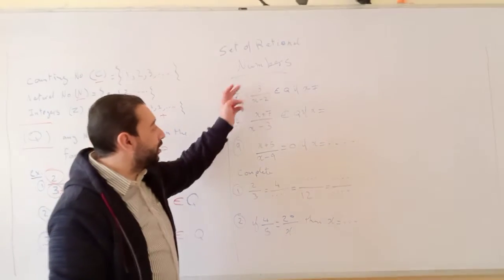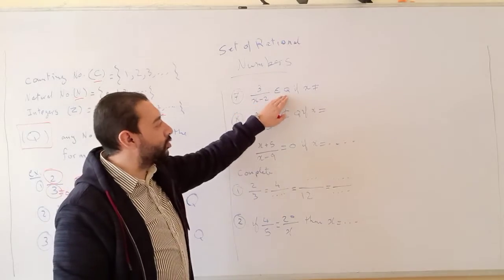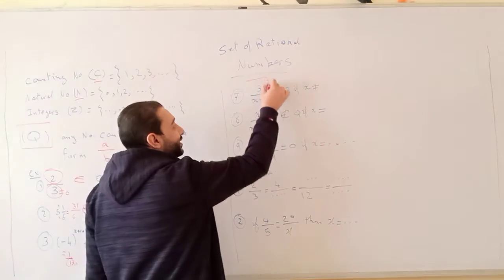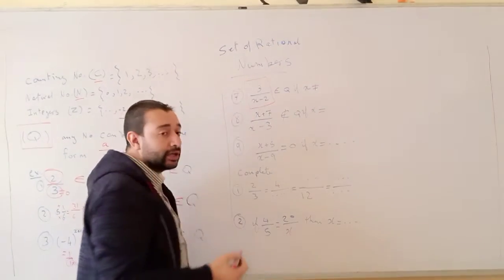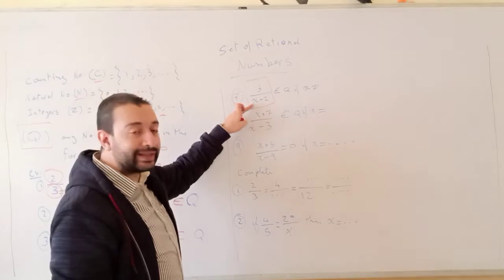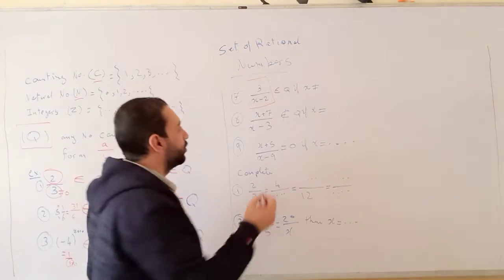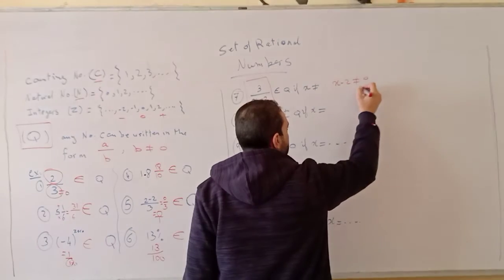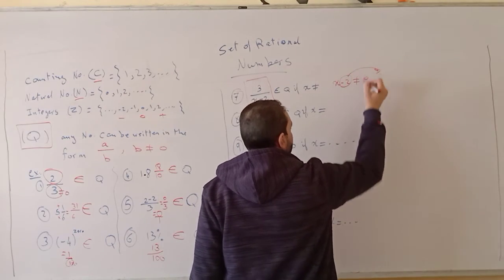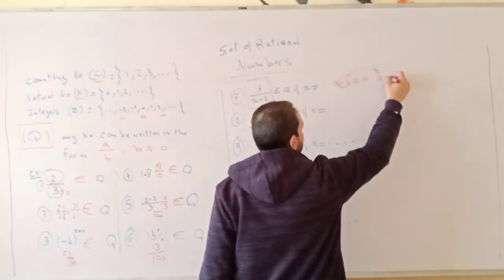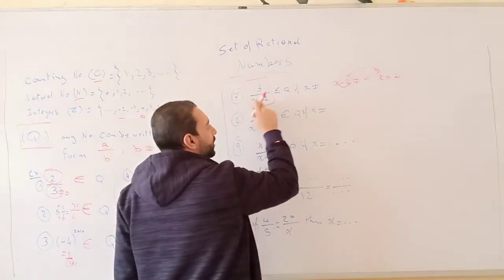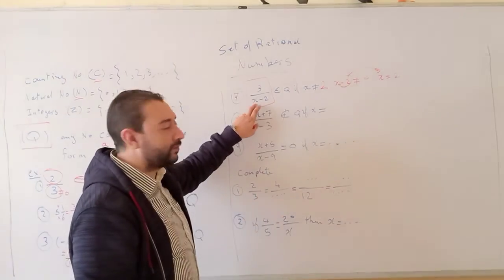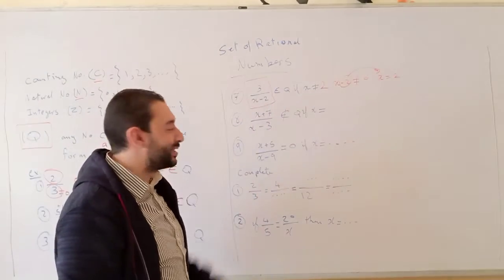Question 7: 3 over (x minus 2) belongs to Q. What does it mean for this fraction to belong to Q? It means the fraction is a rational number, so the denominator cannot equal 0. Therefore x minus 2 cannot equal 0, which means x cannot equal 2.